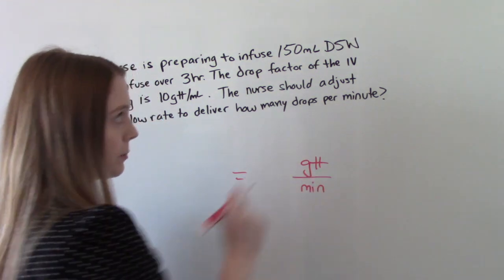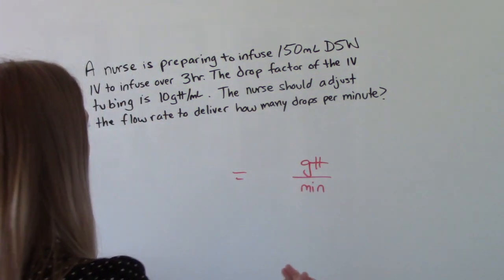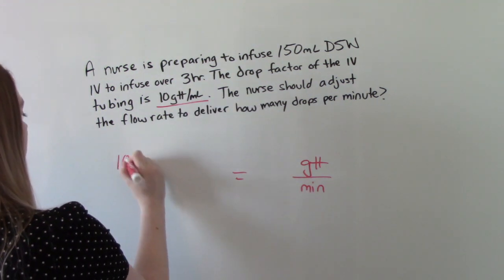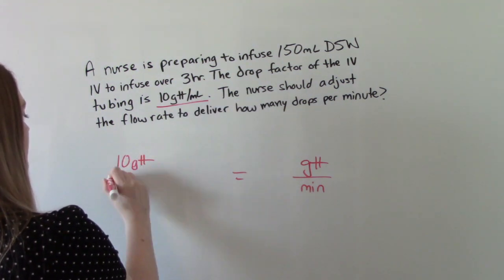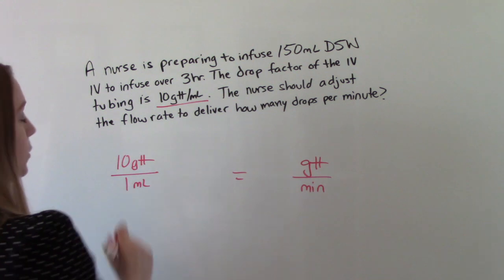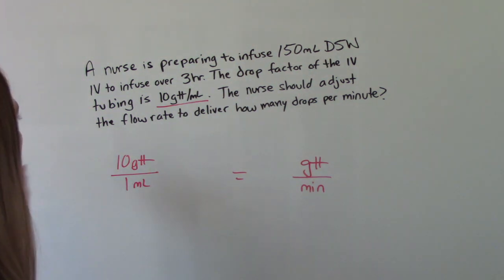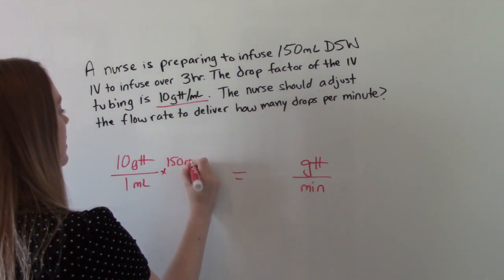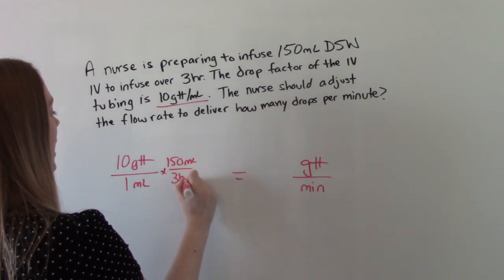So we want drops over minutes. So where do we see drops here in our equation? Right there. So we're going to do 10 drops per 1 ml. And we're going to infuse 150 ml's over 3 hours.